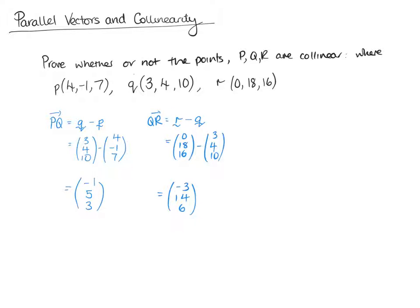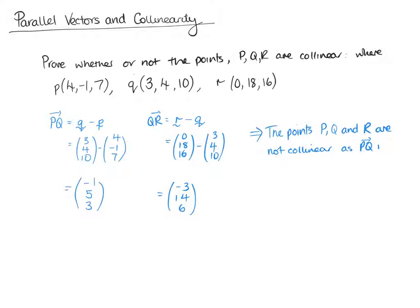So these aren't parallel, so we just need to say that. Remember, we always need to write a sentence. So: the points P, Q and R are not collinear, as PQ is not parallel to QR.